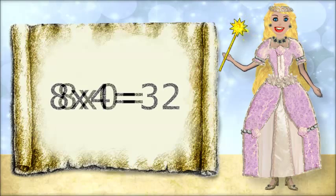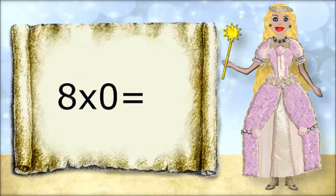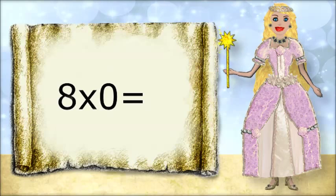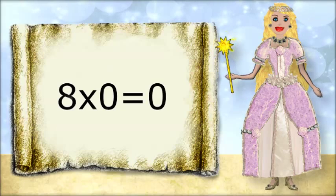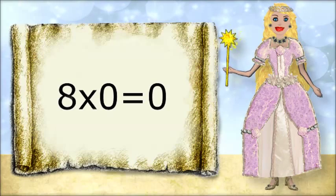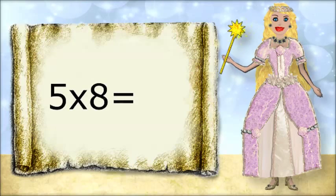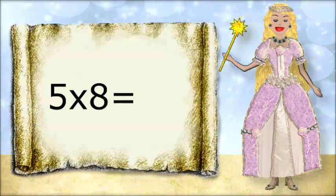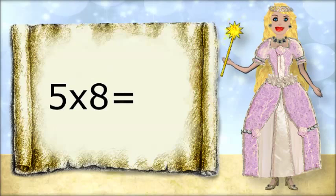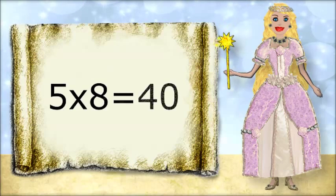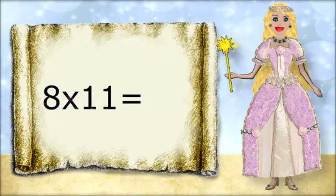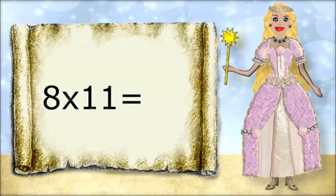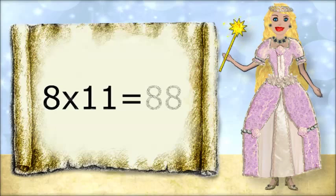8 times 0 equals 0. 5 times 8 equals 40. 8 times 11 equals 88.